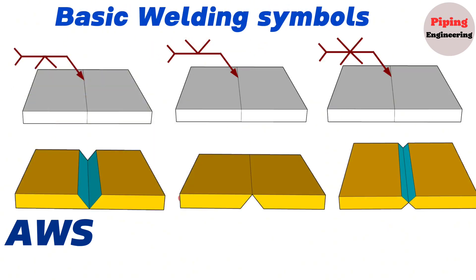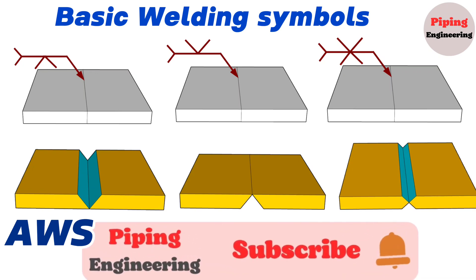V-groove weld has bevels cut on both sides of the weld joint. There may be an angle above the V-groove weld symbol, which is the included angle of the bevels. Also, V-groove welding symbol above or below the reference represents the location on which the weld is carried out.